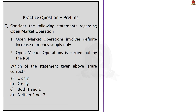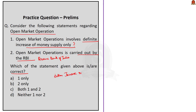Fourth question: 'Consider the following statements regarding open market operation. Statement 1: Open market operations involve definite increase of money supply only. Statement 2: Open market operation is carried out by the Reserve Bank of India. Which of the above statements are correct?' From our discussion, open market operation is exclusively performed by the Reserve Bank of India, which buys and sells securities from the market. Open market operations can either increase or decrease money supply — so Statement 1 is wrong, as it says increase only. Statement 2 is correct as OMO is carried out by the RBI. The answer is Option B: two only.